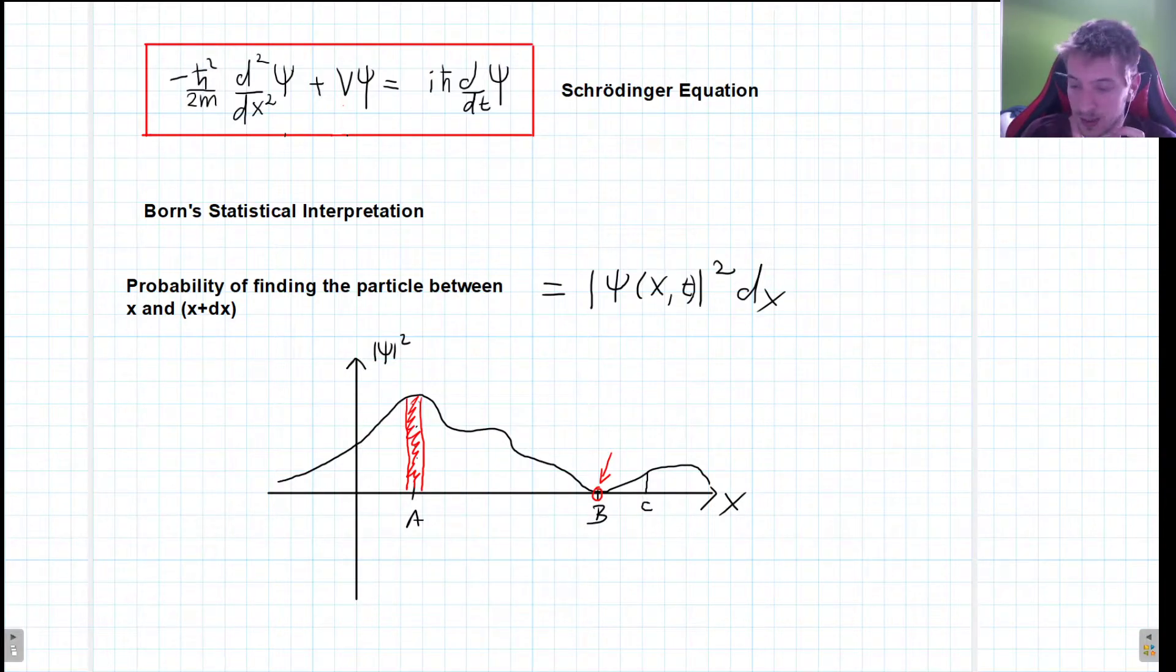Now what if we made an experiment to see where exactly we can find this particle, and in that experiment we determined that the particle was found here at position C. The question now is what does this tell us about the position of the particle before we conducted our experiment? That is one of the most important questions of quantum mechanics and there are several possible answers to this.